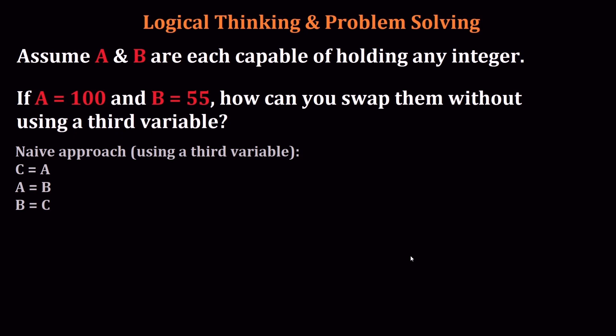Okay, so here's the answer. This is exactly how you can swap those variables without using a third variable. Basically you just take A = A + B, and then B = A - B, and then A = A - B. And if you do that, you'll find out that at the end A is going to be equal to 55 and B is going to be equal to 100. So I've done it without using a third variable.